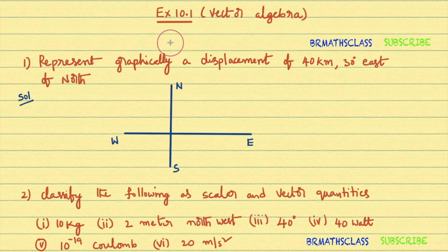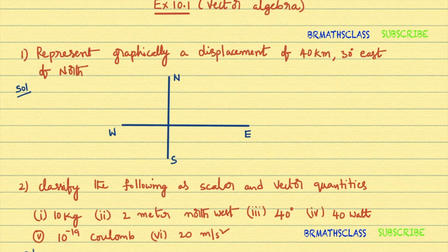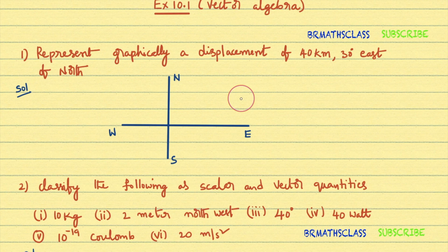Vector Algebra exercise number 10.1, 2nd PUC NCERT Textbook. In this class we are going to do all the problems of exercise 10.1. To understand this exercise you must be good in the theory part of the vector algebra chapter. If you are good in those definitions, you can understand this exercise very easily. However, I will explain the definitions whenever necessary. So let's start the class.